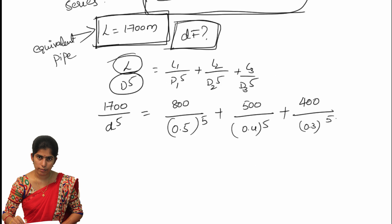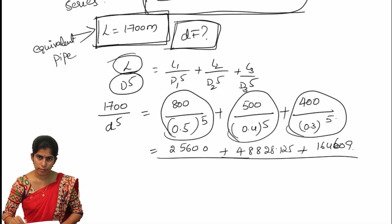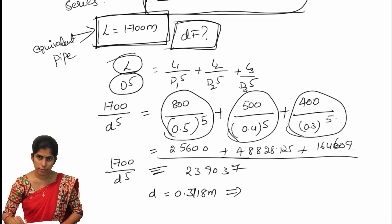Solving these terms, we get 25600, plus 488.125, and 164.609 respectively. Adding these three values gives 239037. So 1700 divided by D to the power 5 equals 239037. Solving for D gives D equal to 0.3718 meters, which converting to millimeters is 371.8 millimeters.